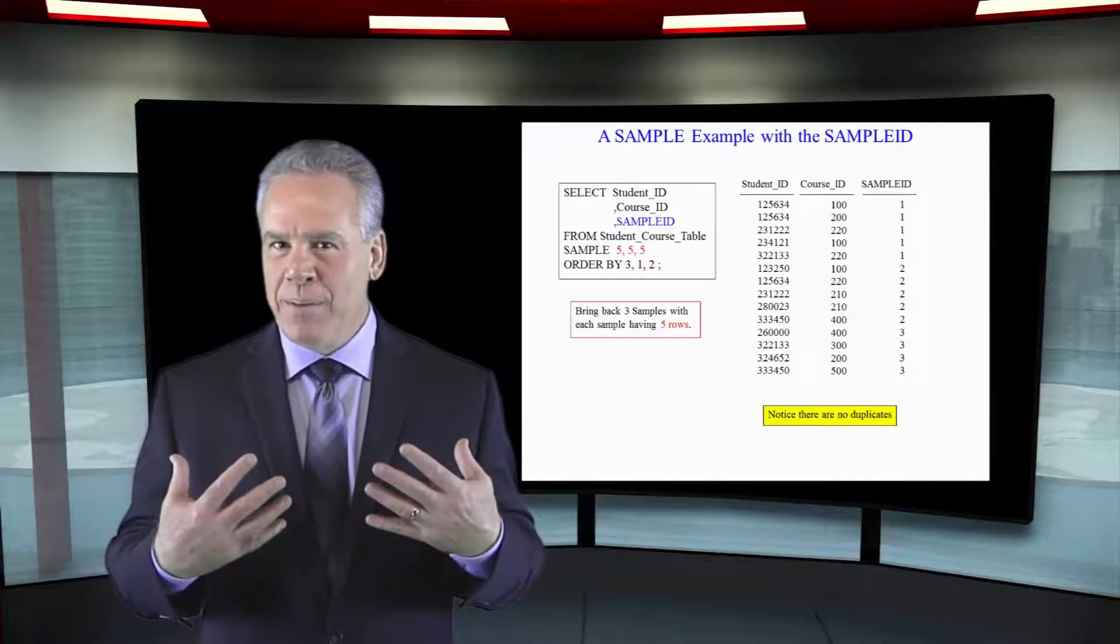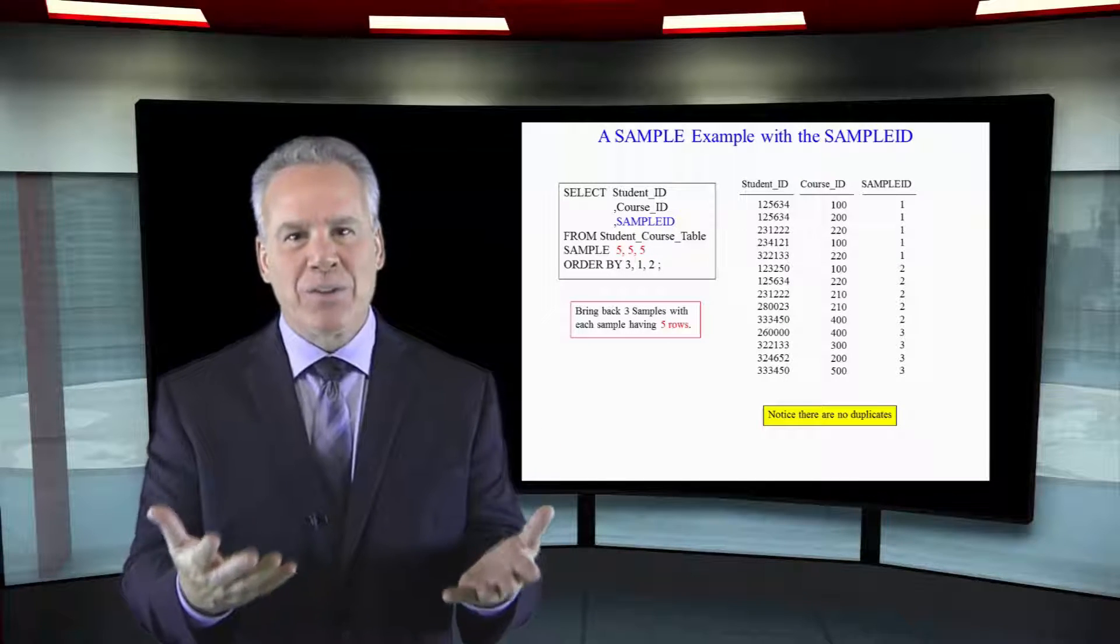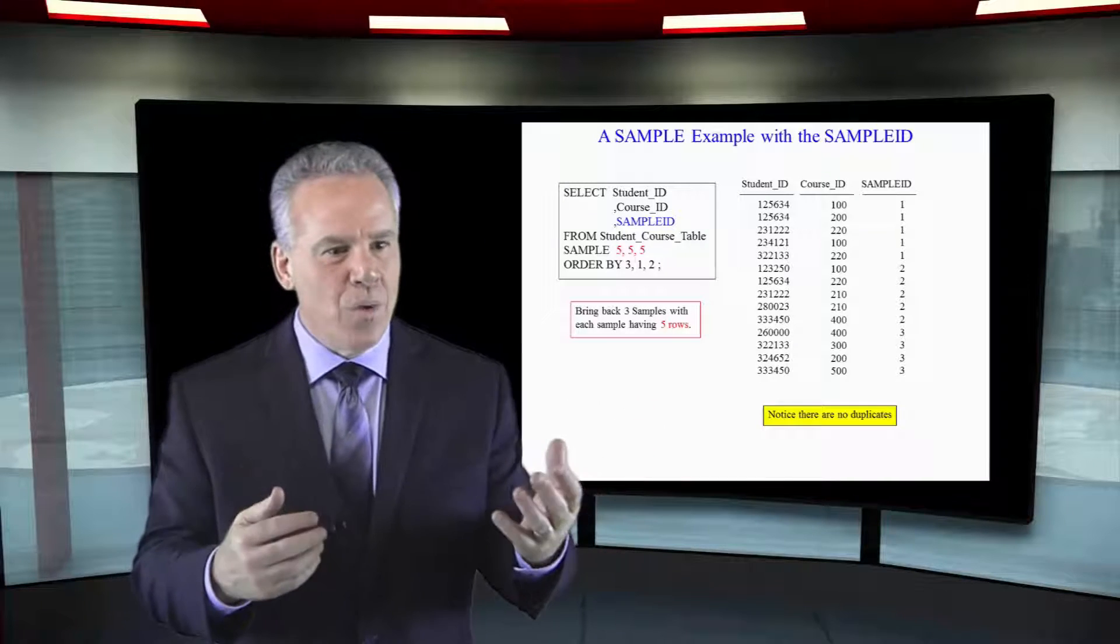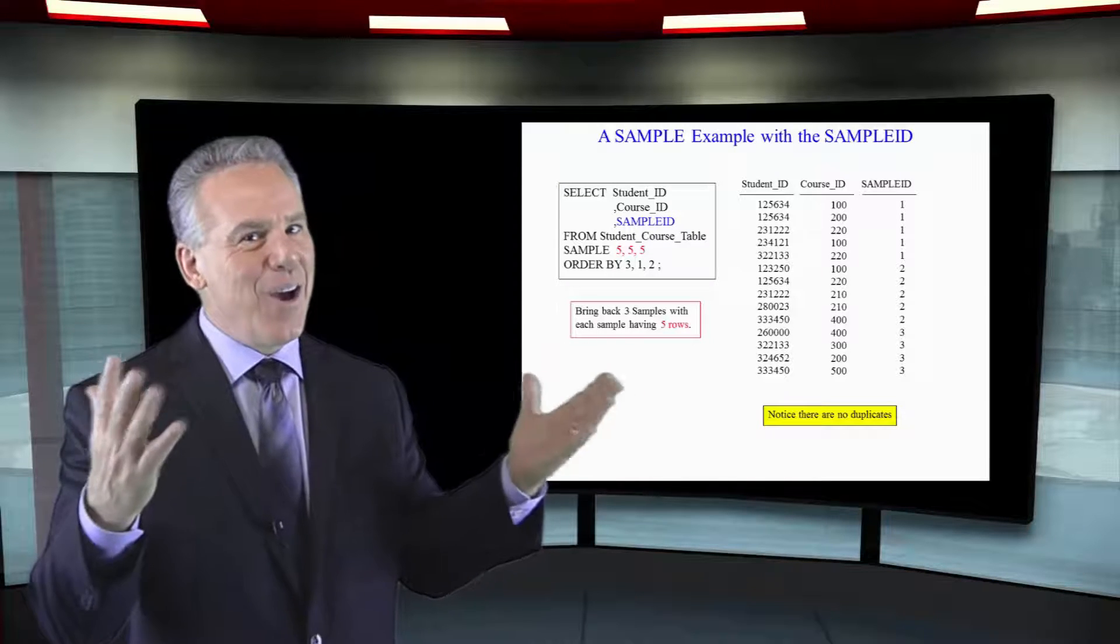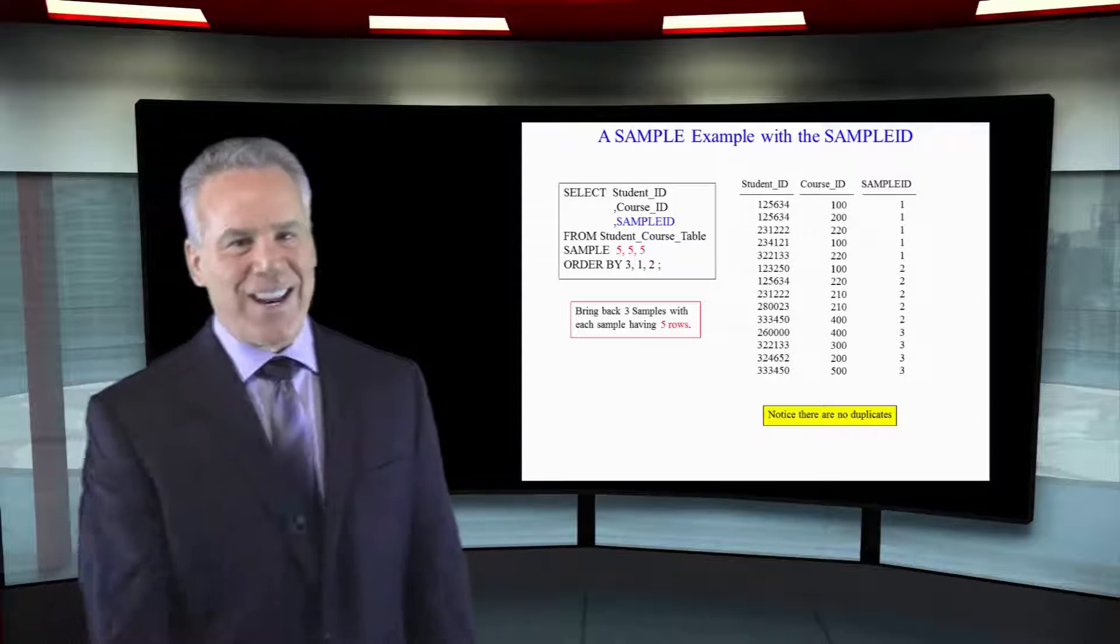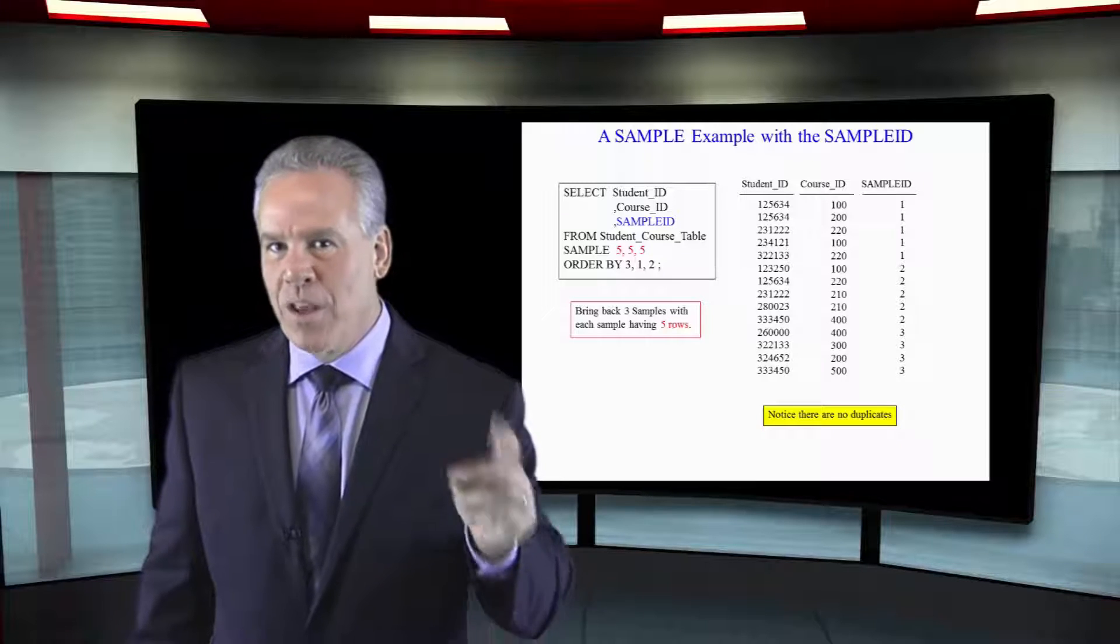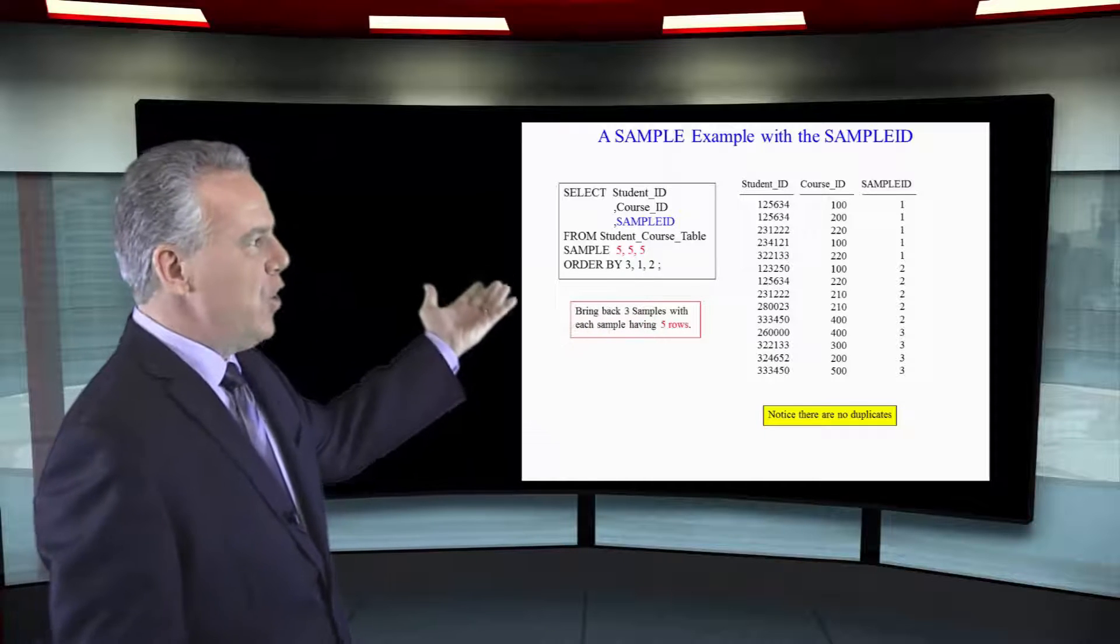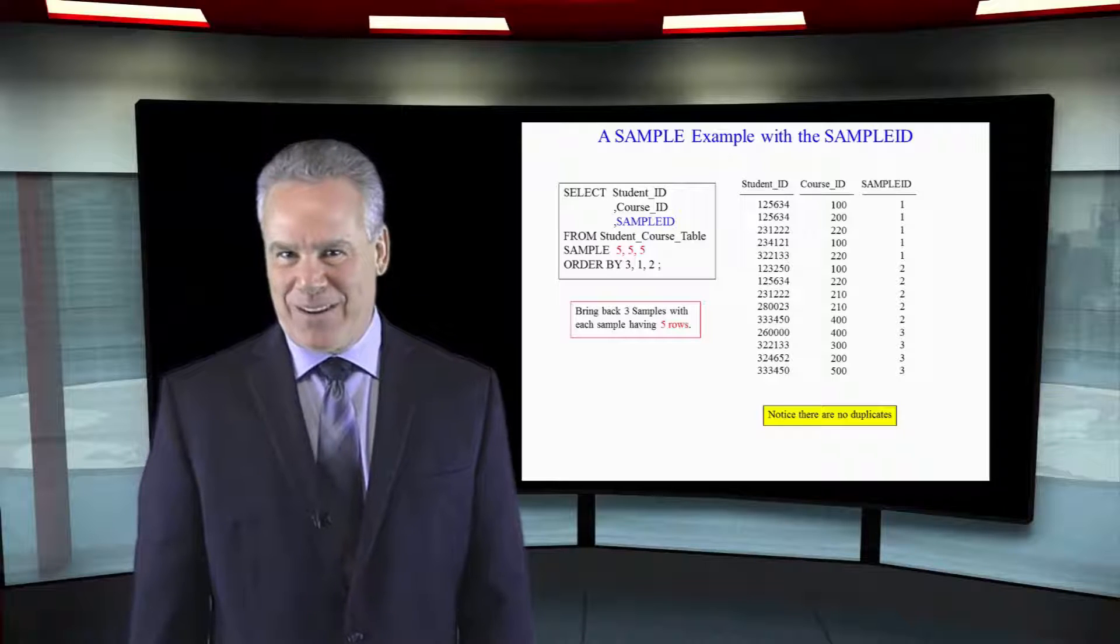You know if somebody came to me and said I need fifty percent sample to do some testing I'd give them a sample of fifty percent. But often they'll come back and they go what are you doing? I wanted two samples of twenty five and that's the way the testing has to go based on our standards and that's why you might have multiple samples. But once again notice there are going to be no duplicate rows coming back because that's the way sample works.